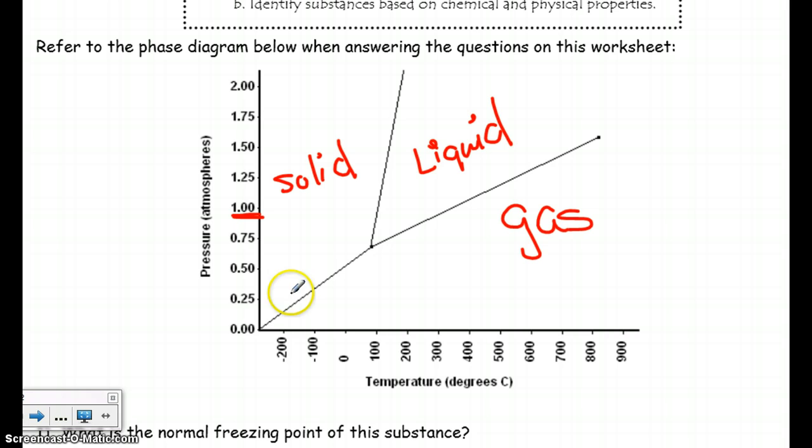Now these lines between the phases, they represent phase changes. So solid to gas, we have two different phase changes that can occur. You're going from solid to gas, that would be sublimation, and then going back from gas to solid, that would be deposition. So this line right here represents those phase changes.